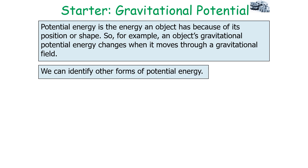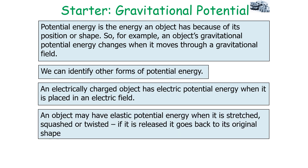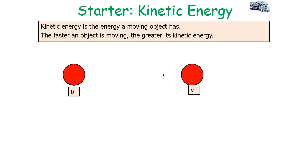We can identify other forms of potential energy. An electrically charged object has electrical potential energy when placed in an electrical field. An object may have elastic potential energy when it is stretched, squashed, or twisted — and when released, it returns to its original shape. Another type of energy is kinetic energy.